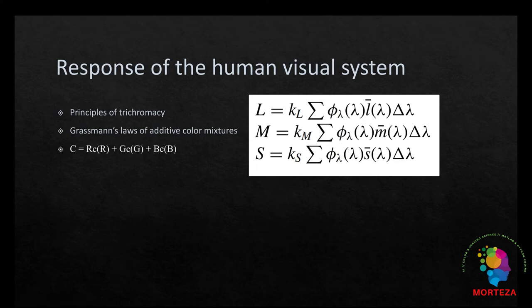Since any color can be matched by certain amounts of these three primaries, those amounts, in other words, those tristimulus values, along with the definition of the primary set, allow the specification of a color. If two stimuli can be matched using the same amounts of primaries, they have the same tristimulus values.